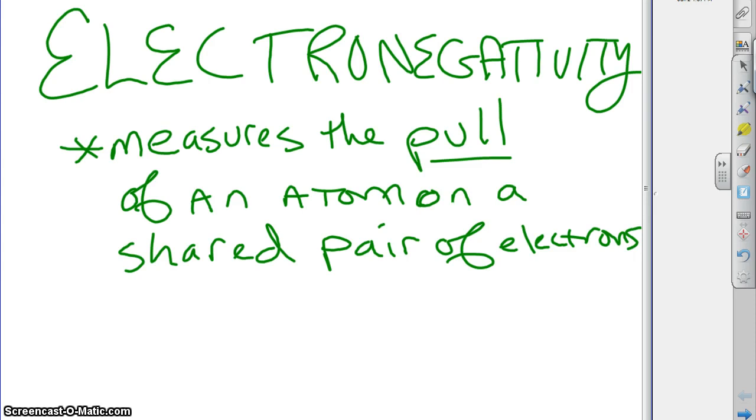Today we are going to learn about bond types and how to predict bond types between atoms. And we're going to need to understand something about electronegativity before we do that. Electronegativity is the measure of the pull of an atom on a shared pair of electrons.